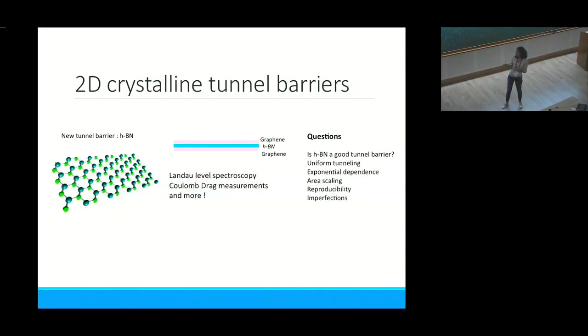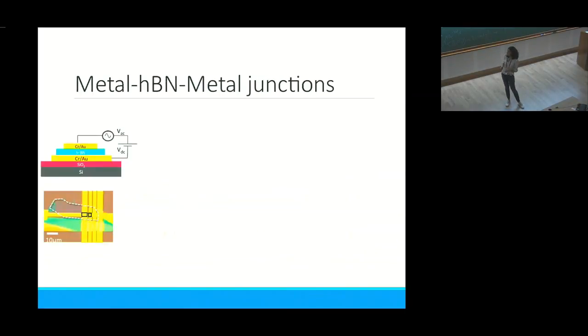Some of the questions we wanted to answer were: Is boron nitride a good tunnel barrier? Do you have uniform tunneling all across your material? Do you have effects from imperfections? How is the reproducibility? We started with simple metal-insulator-metal junctions, the insulator being boron nitride, then gradually replaced it with graphene, graphite, and eventually reached this structure.